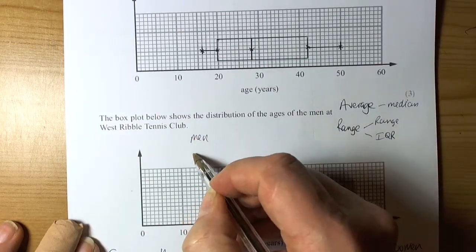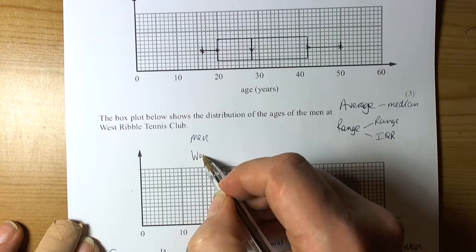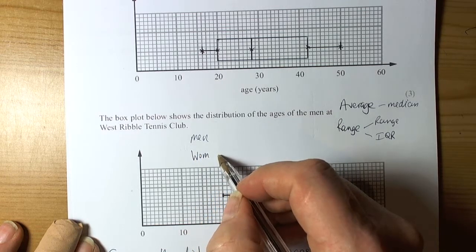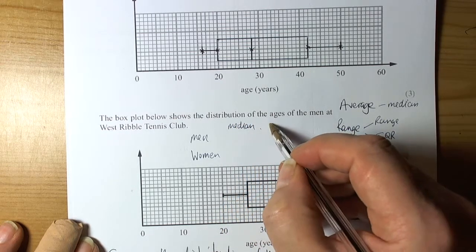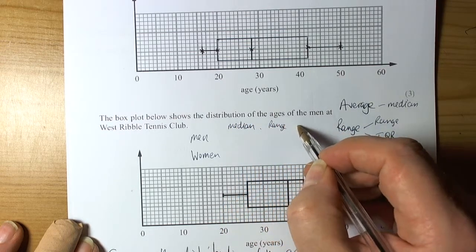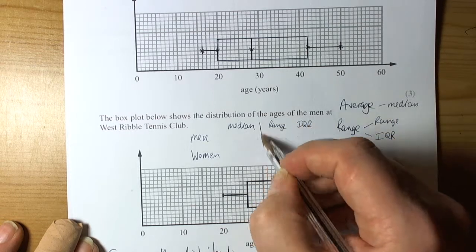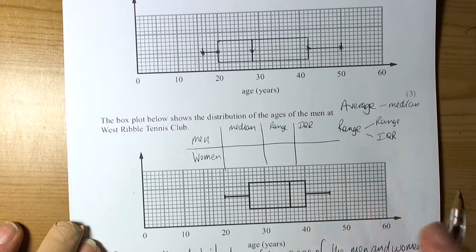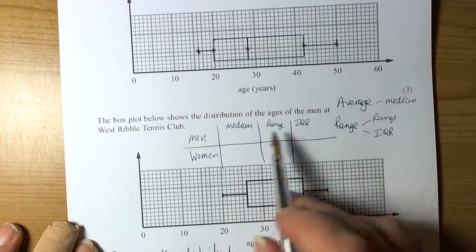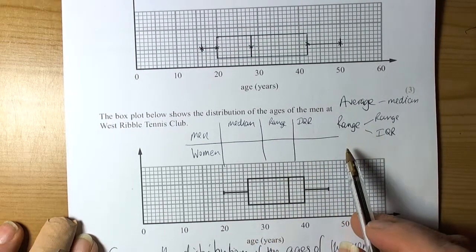So, we've got men, we've got women, and we're going to calculate the median, and we're going to calculate the range, and we're going to calculate the interquartile range. So, again, show the evidence of what you're doing to do your comparisons, get your calculations done, and then write the sentences that compare them.